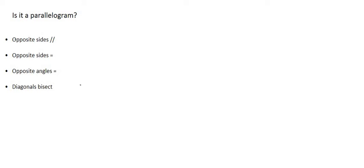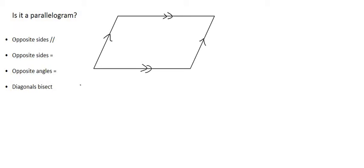A parallelogram is a shape with the following properties. In all our videos prior to this, we started off with having parallel sides, then did a whole lot of congruency and proved that the opposite sides would be equal, the opposite angles would be equal, and the diagonals would bisect.